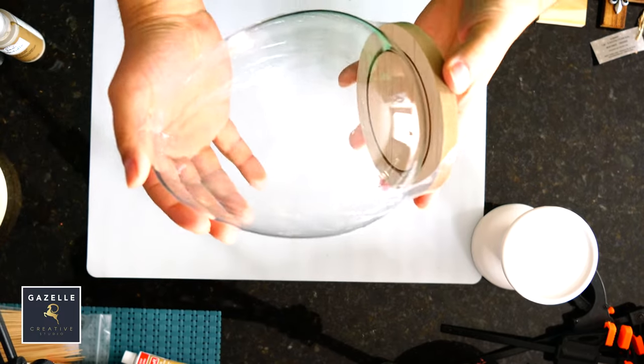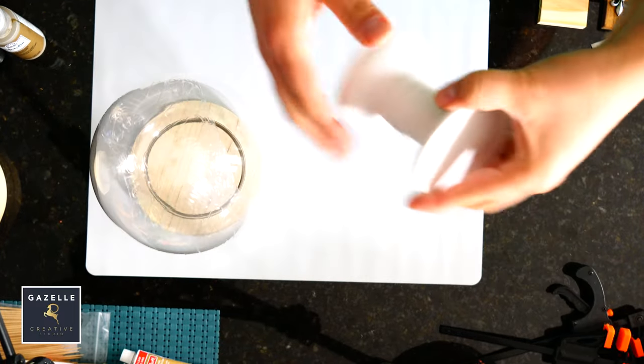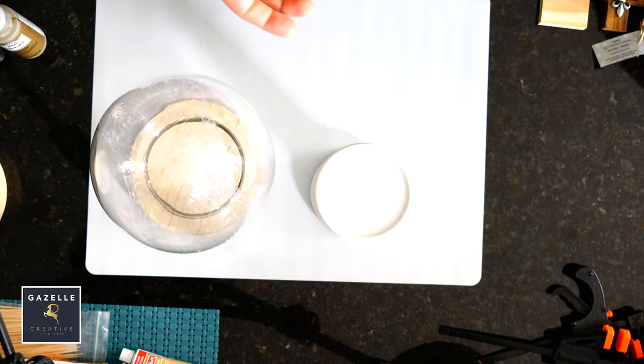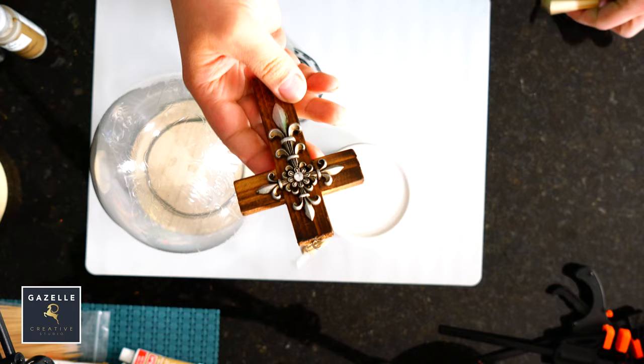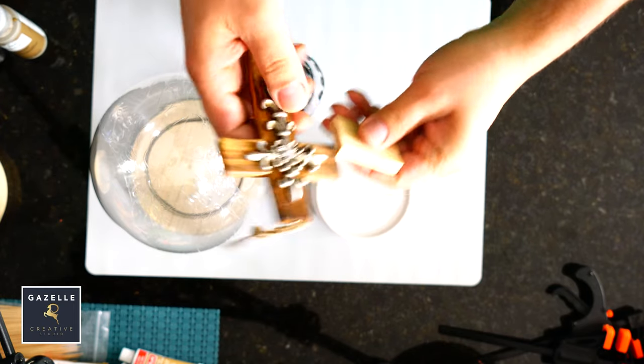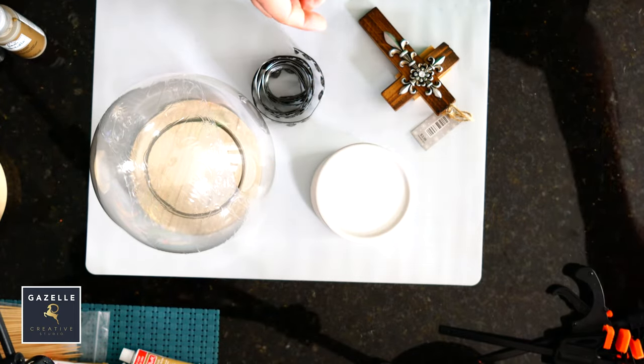For the first DIY we will need an egg-shaped cloche, this one came from Target, a ceramic candle holder, and some metal ribbon from Dollar Tree. This cross is from Hobby Lobby, Spanish moss or polyfill.